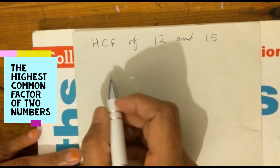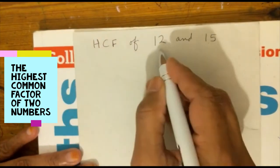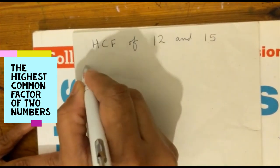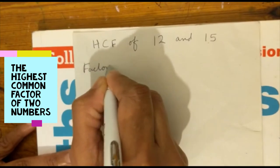Let's see HCF of 12 and 15. This is how you can do that. First, find factors of 12.